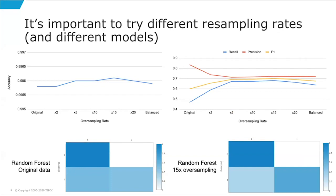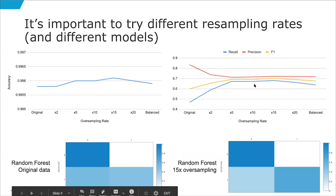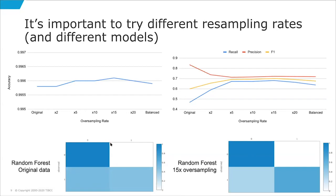In this case, random forest behaved best. On the x-axis I've plotted different upsampling rates. Accuracy on the original data slowly increases as I multiply positive events by 2, 5, 10, then decreases when fully balanced. Balancing to equal positives and negatives is actually not good here; upsampling by a rate of 15 appears best. However, you can't just look at overall accuracy — you need to look at recall and precision, and examine confusion matrices.